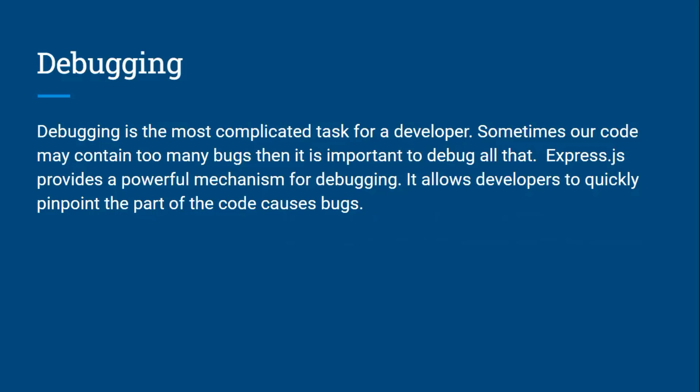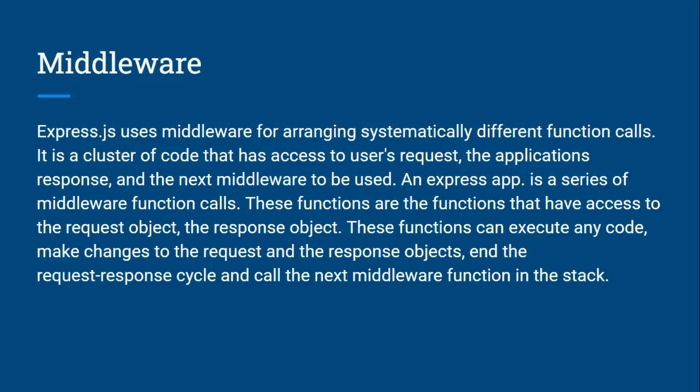Debugging is one of the most complicated tasks for developers, and even in this tutorial we'll encounter bugs we'll need to fix. Sometimes code may contain too many bugs, so it's important to debug all of them. Express.js provides a powerful mechanism for debugging — it allows developers to quickly pinpoint the parts of the code that cause the bug.